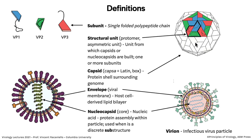Then we have the envelope, which is the viral membrane — always derived from the host cell — and is a lipid bilayer with embedded viral glycoproteins. Envelopes can be on viruses with capsids, or on viruses that have a nucleocapsid or just nucleic acid inside without any higher-order structure.